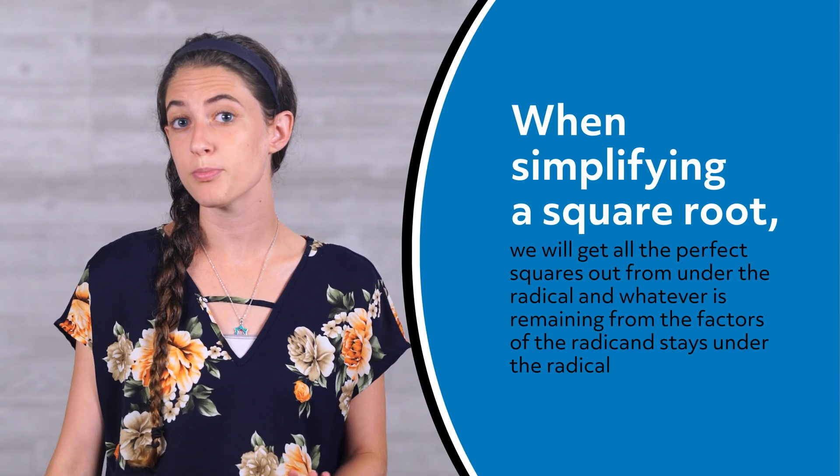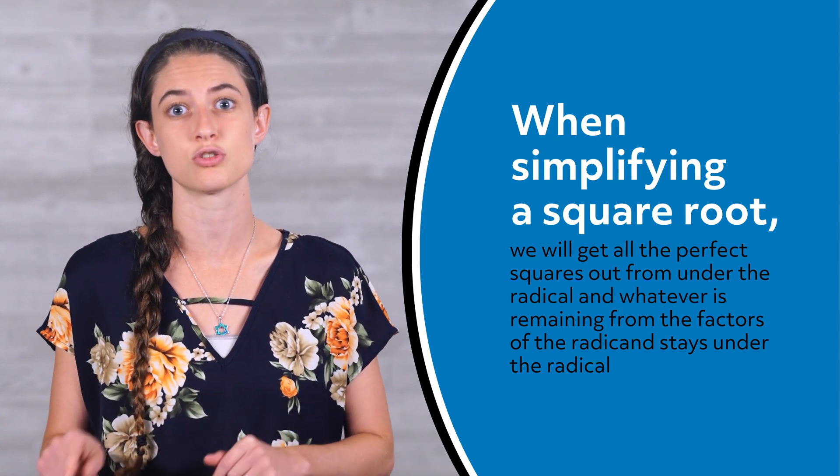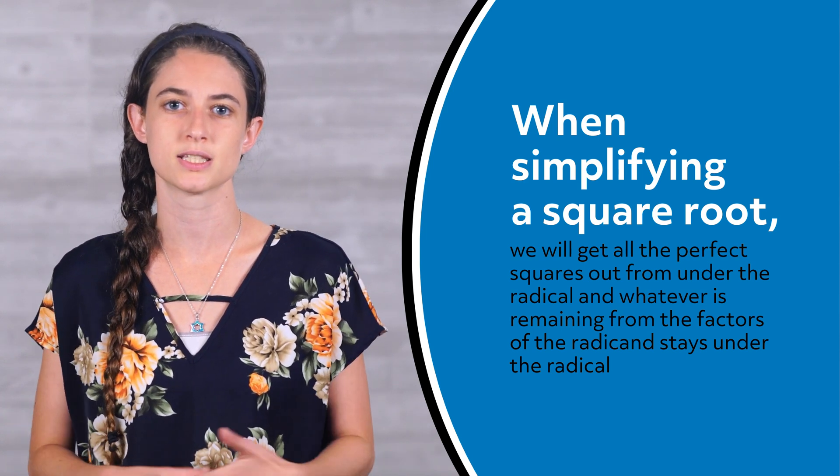But what if we aren't given a perfect square? Well, then we will have to simplify the square root. When simplifying a square root, we will get all the perfect squares out from under the radical, and whatever is remaining from the factors of the radicand stays under the radical. Let's look at an example.